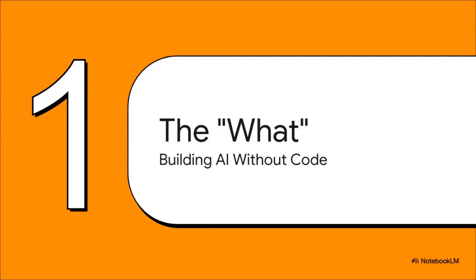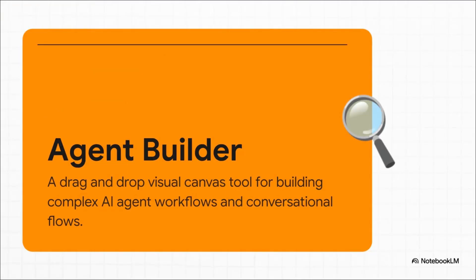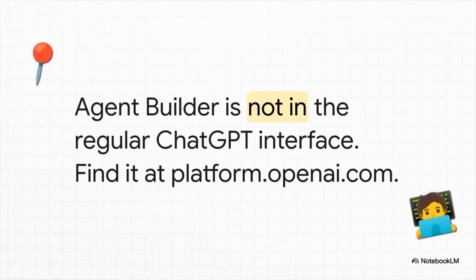So what exactly is this thing? Think of it like a digital whiteboard for designing a conversation or a workflow. Instead of cramming a ton of logic into one giant complicated prompt for a GPT, you're visually connecting different functional blocks — building out the agent's brain step by step. You're not going to find this inside the normal ChatGPT you use every day. This is a developer tool found in OpenAI's playground on their platform, really designed for building robust, production-ready AI agents.